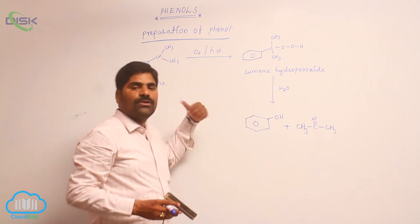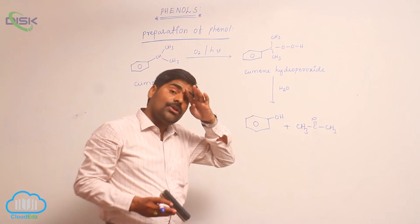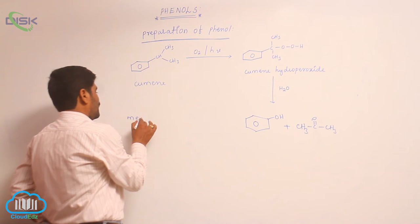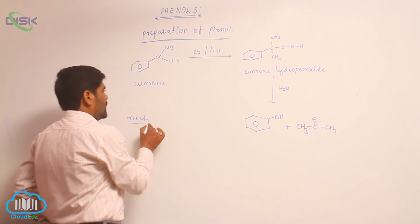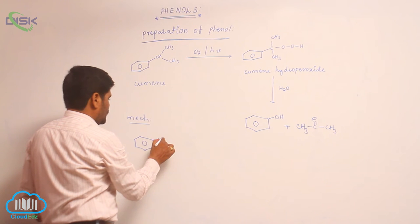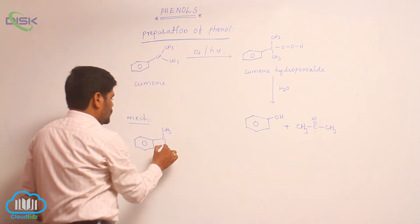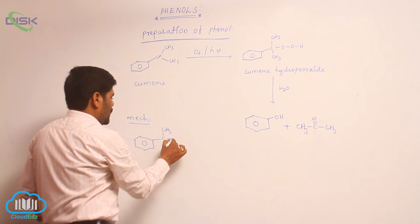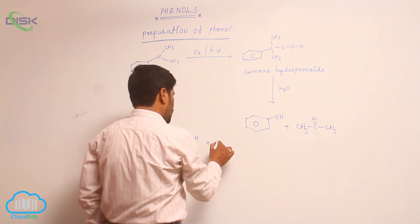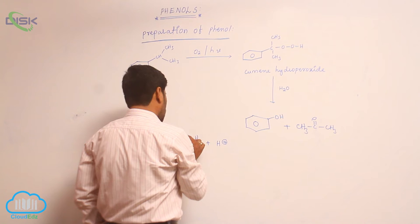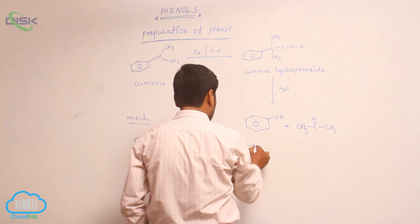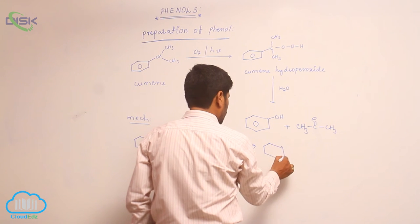This particular rearrangement is known as the cumene hydroperoxide rearrangement. For the mechanism: initially, cumene reacts with sunlight to form cumene hydroperoxide, which then reacts with an acid.